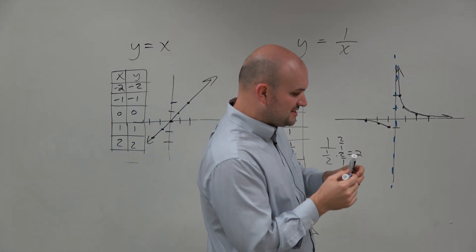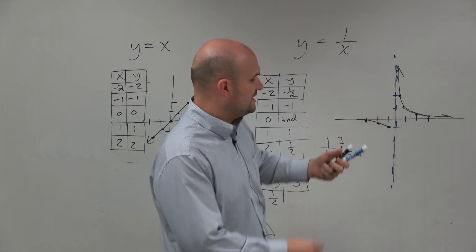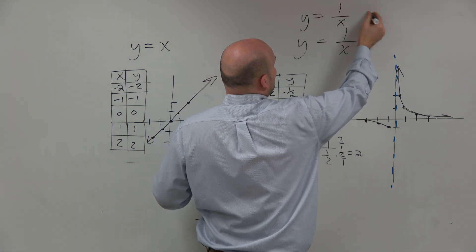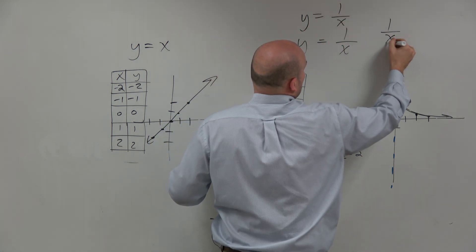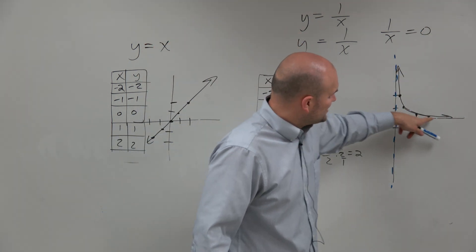What we can also see is no matter what we plug in for x, is y going to equal 0? Let's think about that. If y = 1/x, is that ever going to equal 0? That's what we want to figure out. What value here does it actually get to 0?